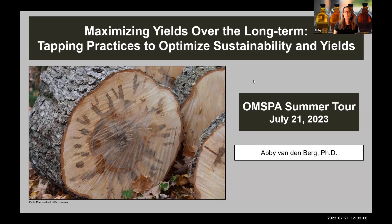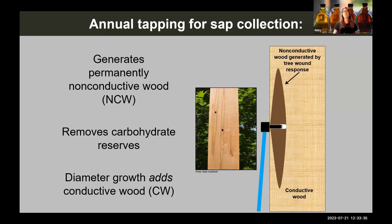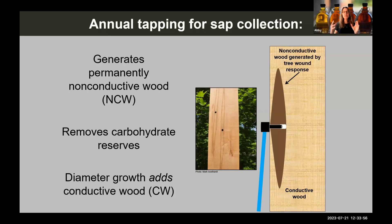Each year when we tap a tree for sap collection, a couple of different things are happening. The tree's response to that tap hole wound results in the formation of a zone of wood that is permanently non-conductive to either sap collection or water movement. We also know that collecting sap removes a portion of the tree's sugar or carbohydrate reserves. On the other hand, each year the tree adds new conductive sapwood during annual radial growth, and photosynthesis during the growing season replenishes some of those carbohydrate reserves.